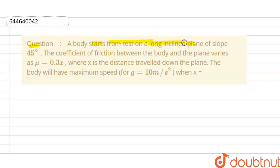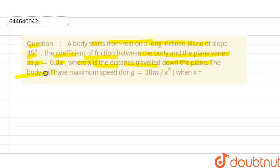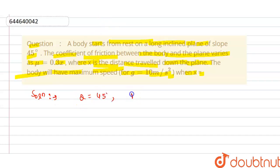Hello students. Today our question is: a body starts from rest on a long inclined plane of slope 45 degrees, and the coefficient of friction between the body and the plane varies as μ = 0.3x, where x is the distance traveled down the plane. Find x when the body has maximum speed, given g = 10 m/s².